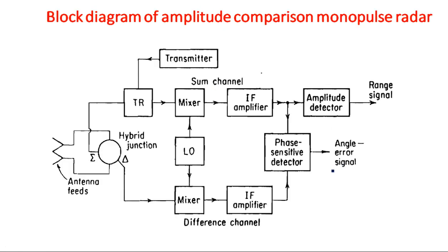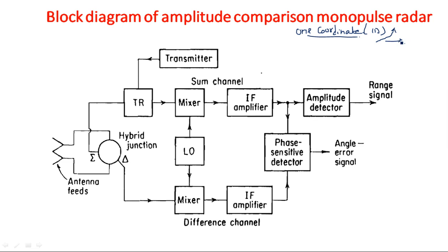This is the block diagram of monopulse tracking radar - amplitude comparison monopulse tracking radar with only one coordinate system. One coordinate system rotates the antenna plate in only two directions: left and right, on the same plane. I am discussing only one coordinate system - one-dimensional, either in the X direction or the Y direction, vertical or horizontal.